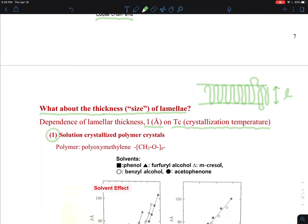The first example is solution-crystallized polymer crystals. And this one is polyoxymethylene. The chemical structure looks like this. In other words, we call this polyacetal.